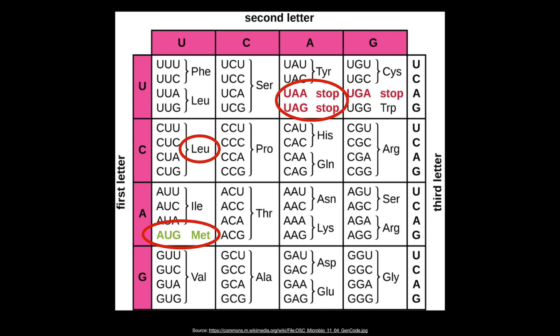Most interestingly, this genetic code has been conserved over time, as we observe it in all living organisms with only very few exceptions. That is why it is referred to as the universal genetic code.